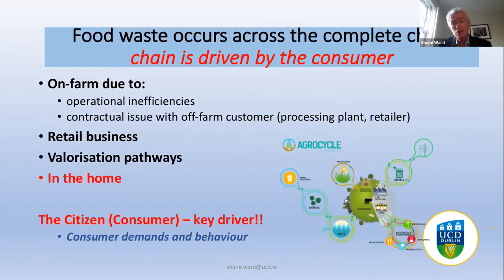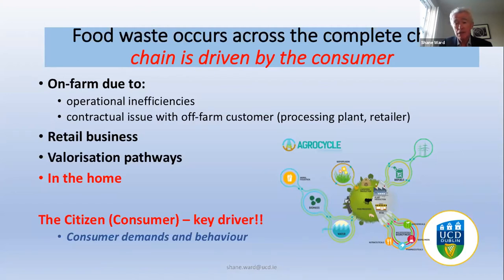Food waste occurs across the complete chain, and it is driven by the consumer. But in the statistics that are quoted, on-farm production is generally ignored — meaning on-farm operational inefficiencies and contractual issues between the customer, which may be a retailer, and the farmer. A farmer may have to reject some produce simply because the retailer may not be in a position to purchase it because it doesn't meet a particular standard. The retail business, valorization pathways, the home — the citizen is the key driver on the basis of consumer demand and behavior.